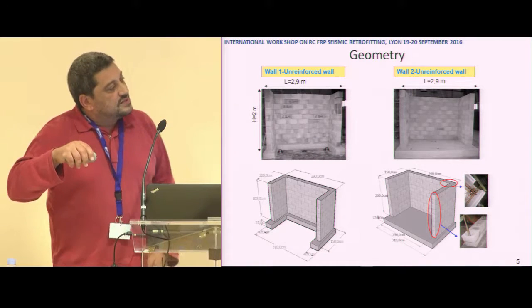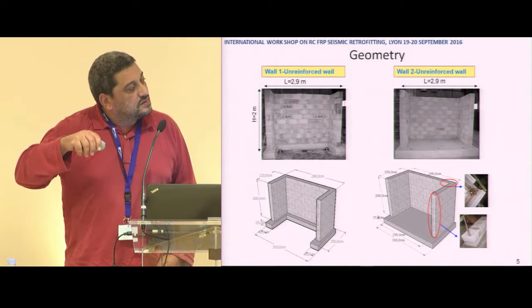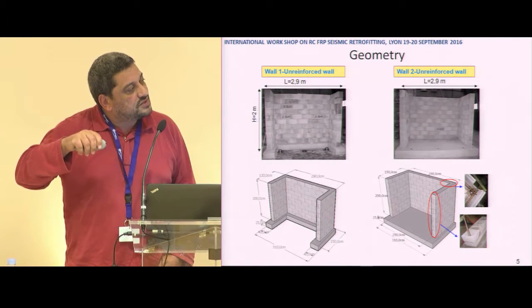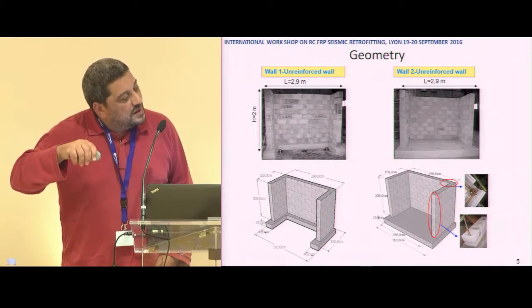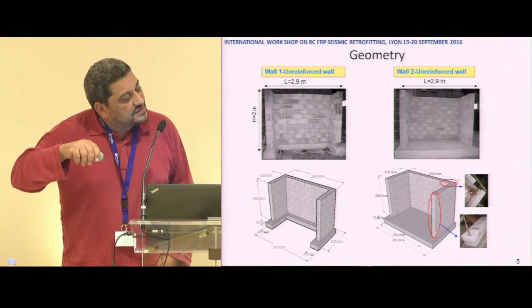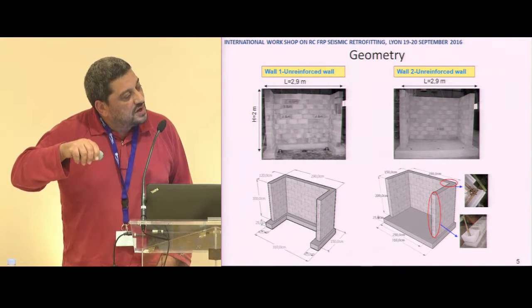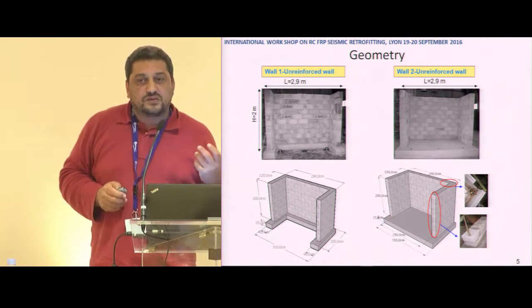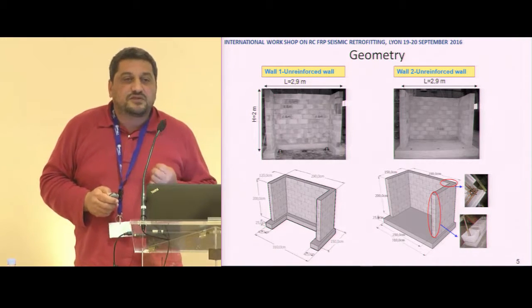Here you can see the two mock-ups at real scale: two meters in height and about three meters in length. We have two configurations for boundary conditions — one with the concrete beam and one with the concrete slab. The slab boundary configuration is stiffer than the beam configuration, and we want to gauge the effect of boundary conditions.